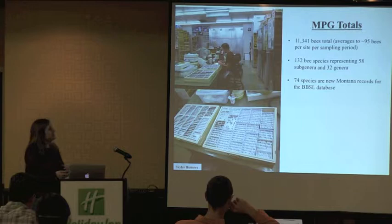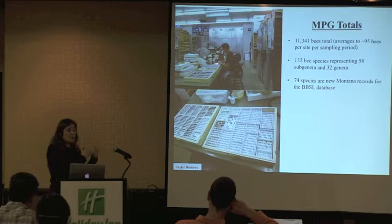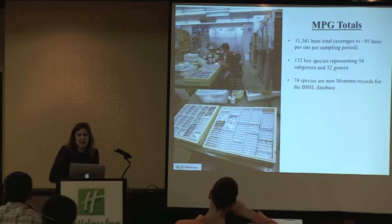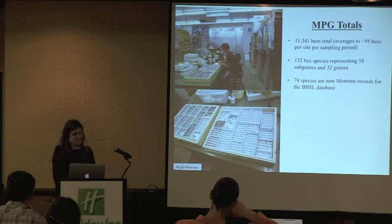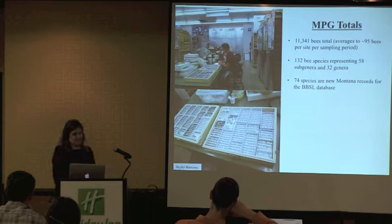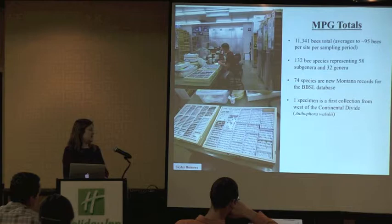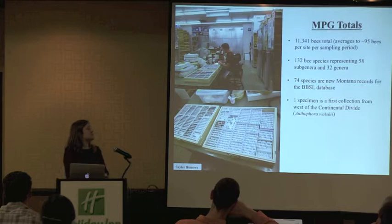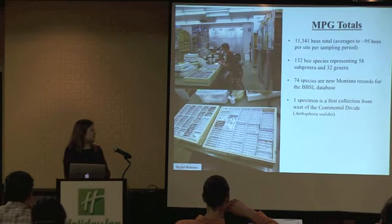Talking to Skylar about the 74 new Montana records, he said most of those species have been collected all around Montana but there just hasn't been much systematic collecting or reporting here — if you're not telling people about the bees you've collected, no one can benefit. One specimen was the first catch west of the Continental Divide of a little digger bee called Anthophora walshii — the nearest western collection to ours is in North Dakota, and everything else was found east of there.